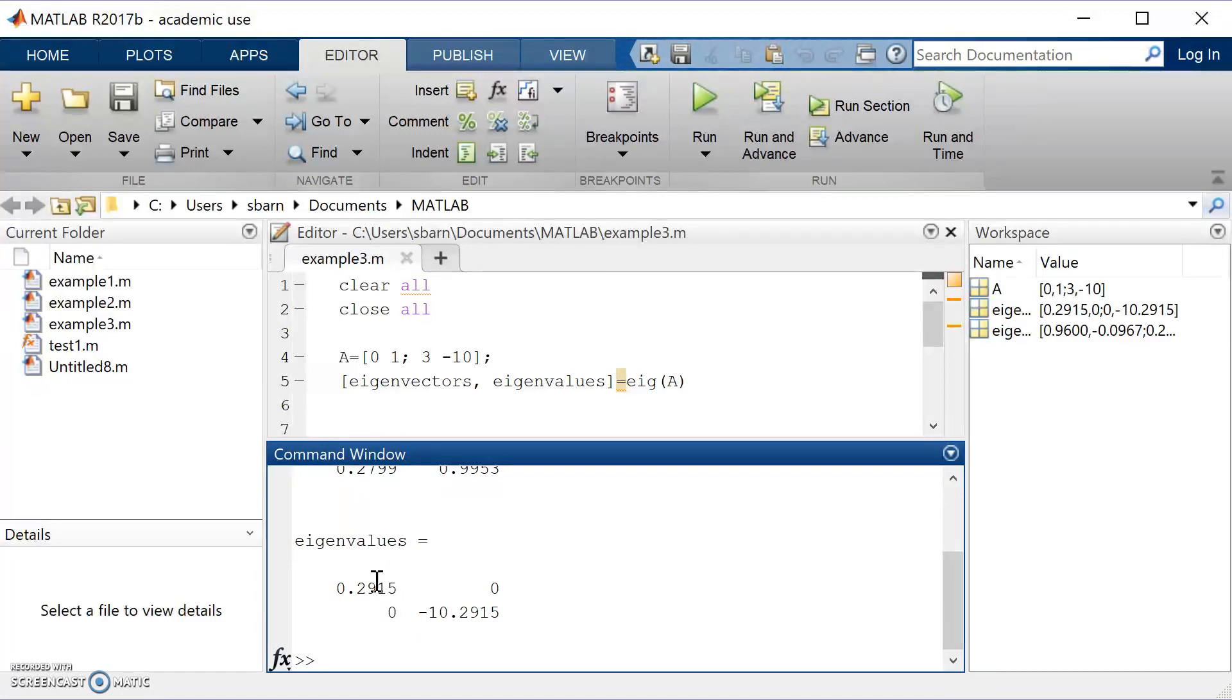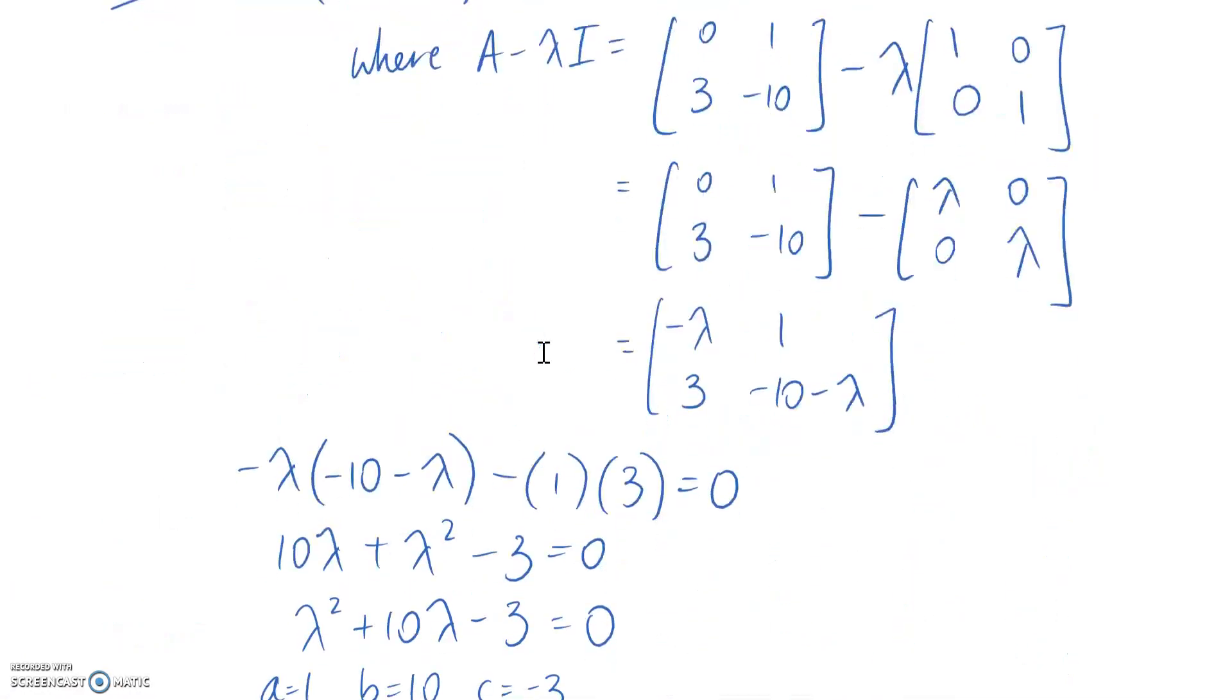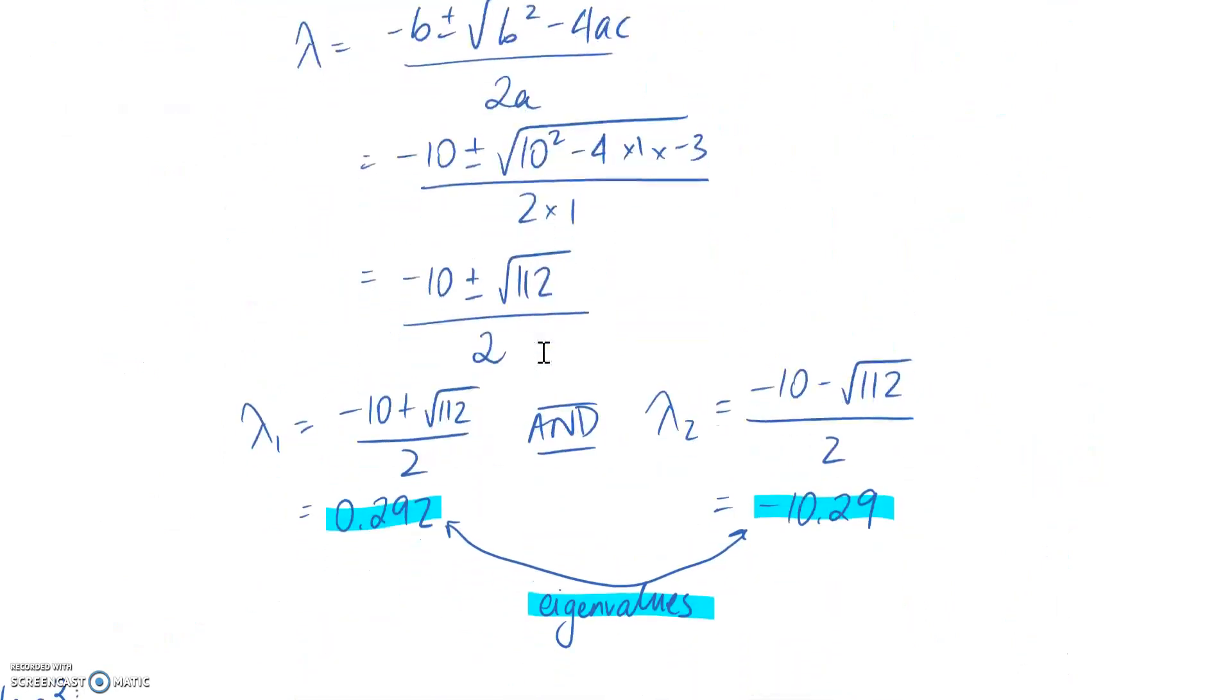So let's start with the values one. We can see it's giving us 0.292 approximately and negative 10.29 for the second one. And if we go over to our solution that we worked through previously, I have highlighted that we indeed got these same values out using our manual methods.